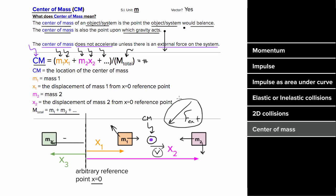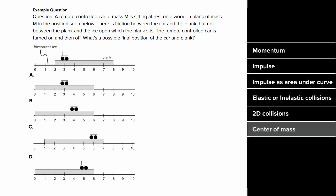So what's an example problem involving center of mass look like? Let's say a remote control car of mass M is sitting at rest on a wooden plank, also of mass M, in the position seen here. There is friction between the wheels of the car and the plank, but there's no friction between the plank and the ice upon which the plank is sitting.